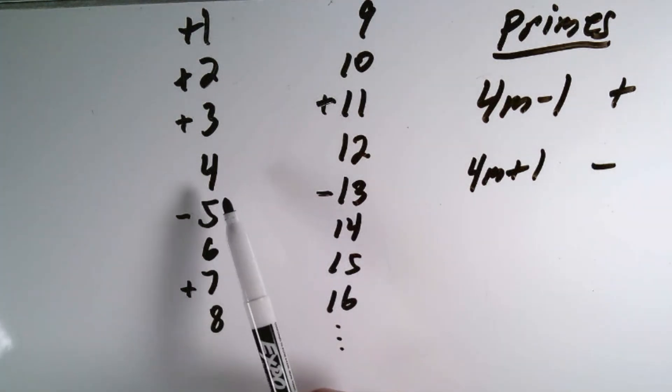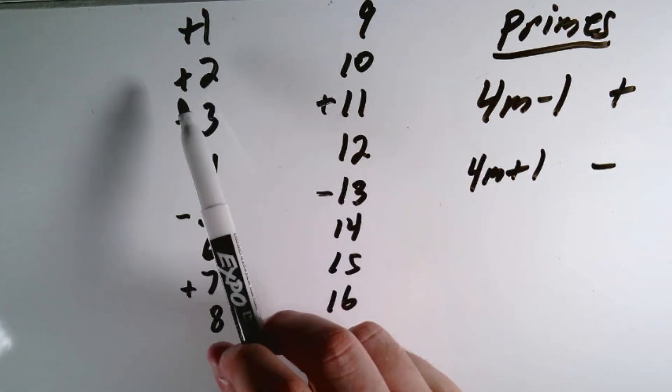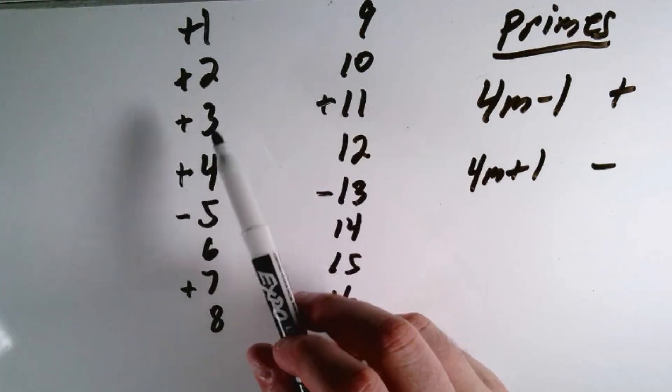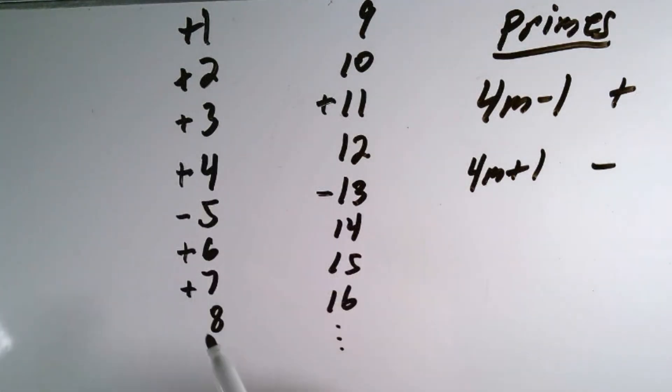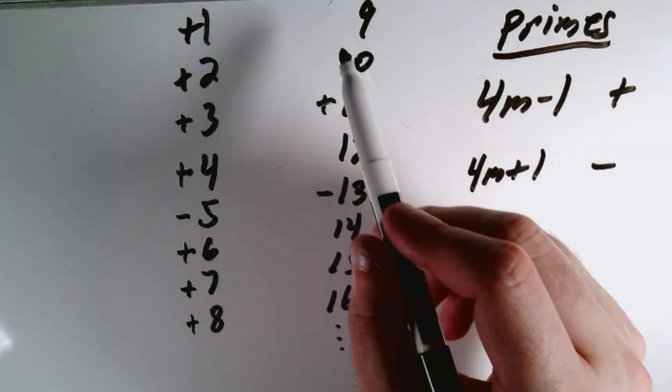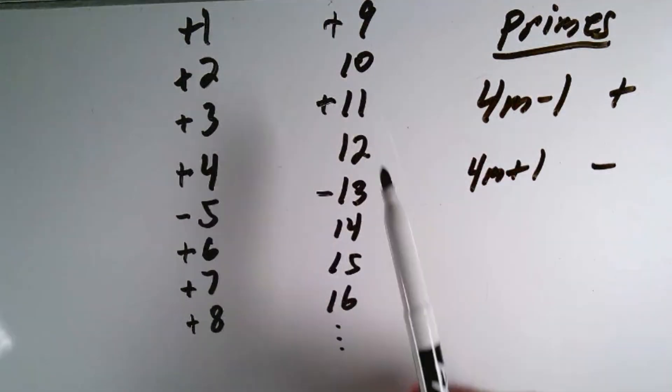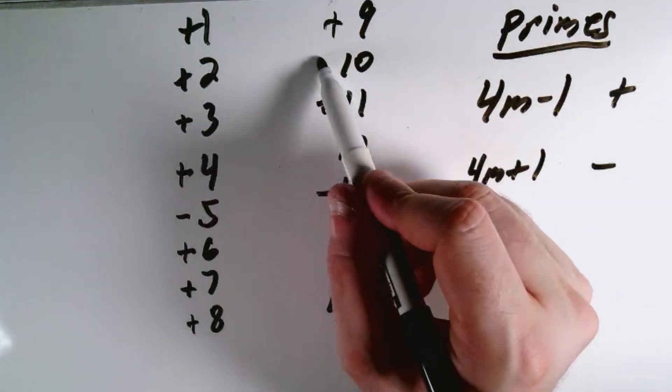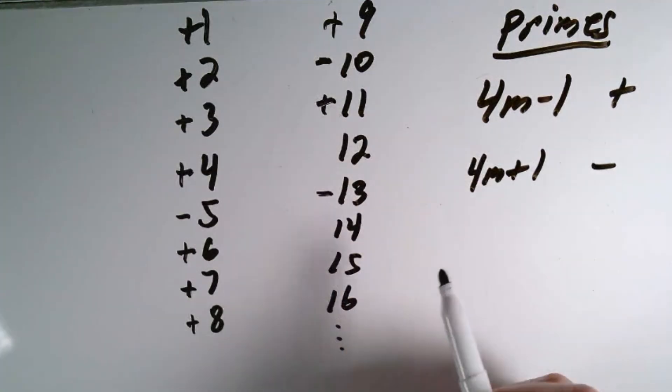Then for the composite numbers, all we're going to do is multiply their prime factors together to see what their sign is. So like 4 is 2 times 2, which is positive times positive, so that's a positive. 6 is 3 times 2, which are both positive, so that's positive. 8 is 2 times 2 times 2, which is all positive. 9 is 3 times 3, which is positive. But 10 is 5 times 2, which is a negative times a positive, so that's a negative. And then we just keep going.